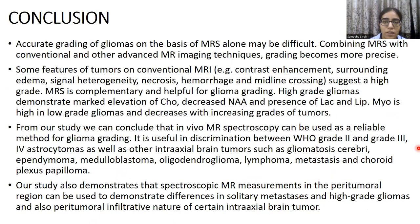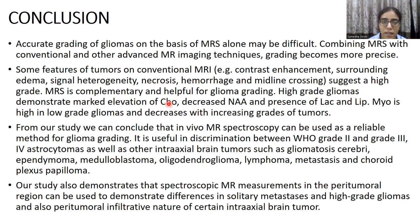Accurate grading of gliomas on the basis of MRS alone can be very difficult; combining MRS with conventional and other advanced MRI techniques leads to more precision in grading. Some features of tumors on conventional MRI — such as enhancement and surrounding edema — suggest high grade, but MRS is complementary and helpful for grading. High-grade gliomas demonstrate marked elevation of choline, reduced NAA, and presence of lactate and lipid. Myoinositol can be high in low-grade tumors and decreases with increasing tumor grade. We conclude that in vivo MR spectroscopy can be used as a reliable method for glioma grading, useful in discrimination between WHO grade 2, 3, and 4 astrocytomas, as well as other intra-axial brain tumors including gliomatosis cerebri, ependymoma, medulloblastoma, oligodendroglioma, lymphoma, metastases, and choroid plexus papilloma. Our study also demonstrates that spectroscopic MR measurements in peritumoral lesions can be used to demonstrate differences between solitary metastases and high-grade gliomas, and the peritumoral infiltrative nature of certain intra-axial brain tumors.